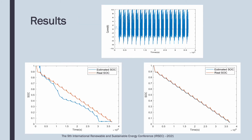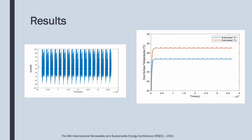In order to verify the applicability of our state estimation technique, it was investigated in a real-time EV application by applying as system input the current generated by a UDDS test. A simulation experiment is then carried out. In order to investigate the battery core temperature variation, which is usually neglected by existing control-oriented models, both core and surface temperatures were simulated under UDDS current. The figure on the slide presents the difference in temperature to take into account.